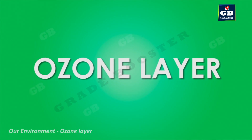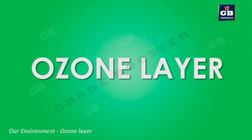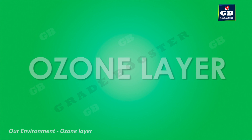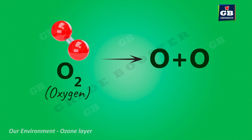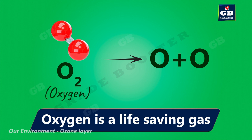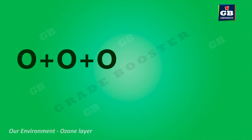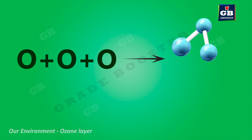The ozone layer — how it is getting depleted. We know one molecule of oxygen is made out of two oxygen atoms. This oxygen is very important for the survival of all aerobic organisms. In some special circumstances, three atoms of oxygen combine to form a molecule called ozone. Its chemical formula is O3.